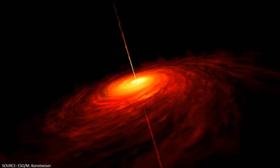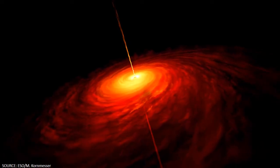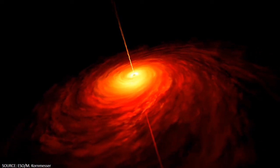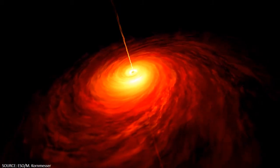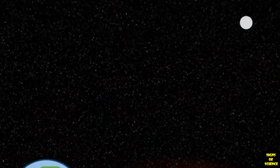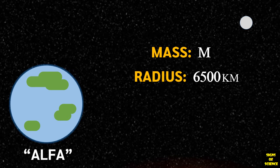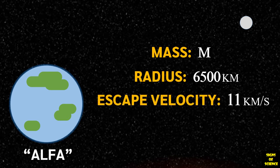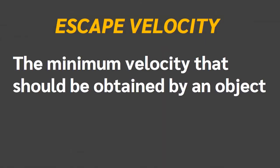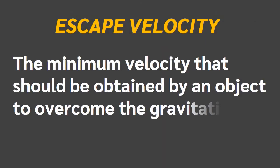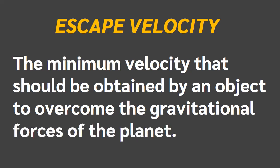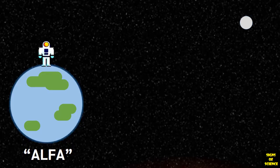We know now that light cannot escape black holes. But how does that happen? Light is the fastest thing in the universe. Well, we can understand this phenomenon by a very simple example. Let's say there is a planet alpha with mass m, radius 6500 km and an escape velocity of 11 km per second. Escape velocity is the minimum velocity that should be obtained by an object to overcome the gravitational forces of a planet and move to outer space.